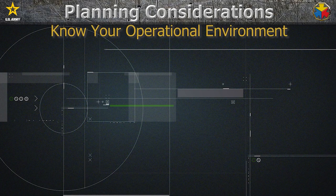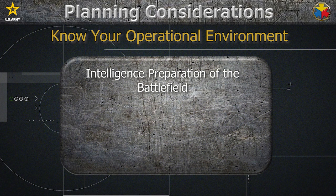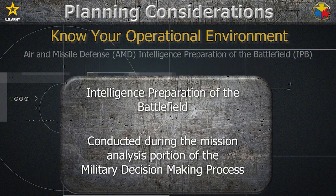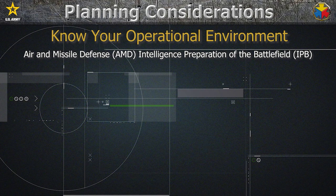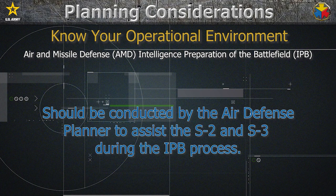The first thing we must do to counter UAS is to know the operational environment, specifically for the UAS threat. The Army has a process already in doctrine, which is the Intelligence Preparation of the Battlefield, conducted during the mission analysis portion of the military decision-making process. The Air Missile Defense Intelligence Preparation of the Battlefield, or AMD IPB, is also a doctrinal process that mirrors IPB but pivots on the air domain. AMD IPB should be conducted by the Air Defense Planner to assist the S-2 and S-3 during the IPB process.